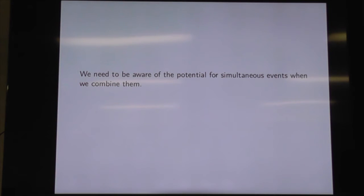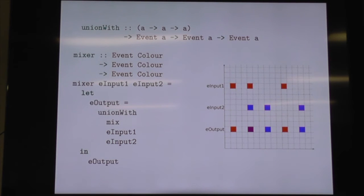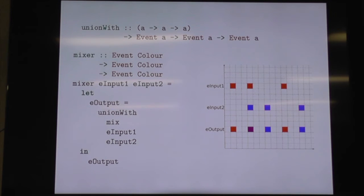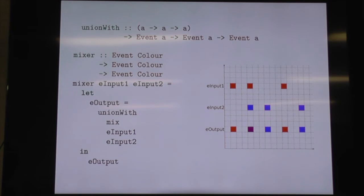We need to be aware of the potential for simultaneous events when we combine them. unionWith is used for combining two event inputs. If they're firing on their own, they just become the output. If they fire together, we use a mixing function. Here I've done that with colours — when input one fires on its own, that's the output; input two on its own gives the blue output; fired together, it mixes the colours.